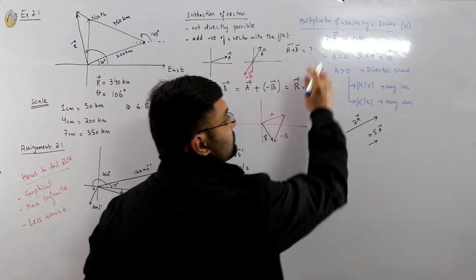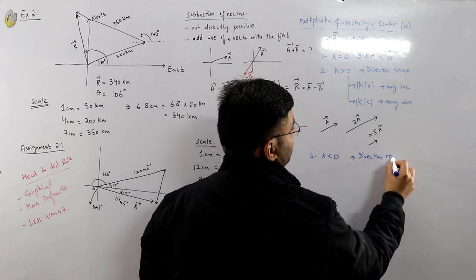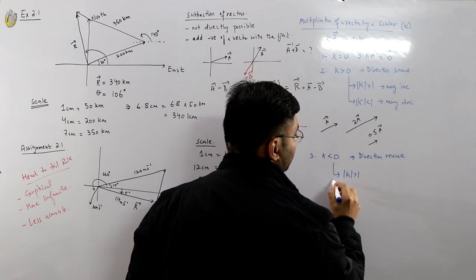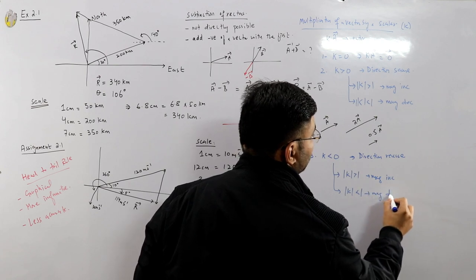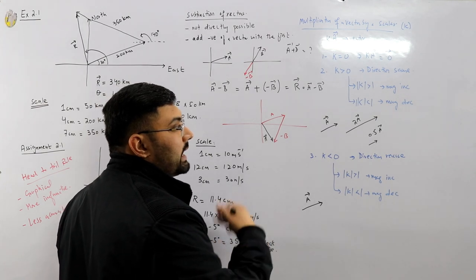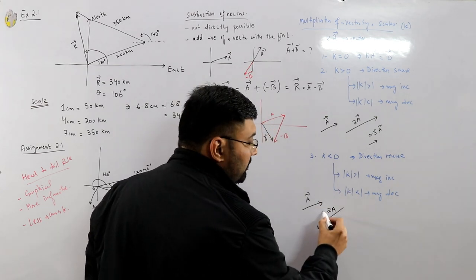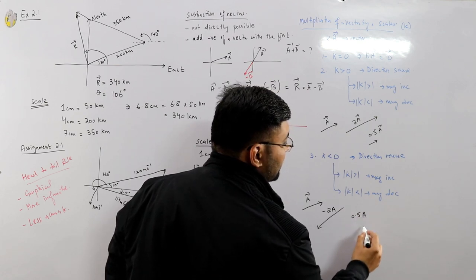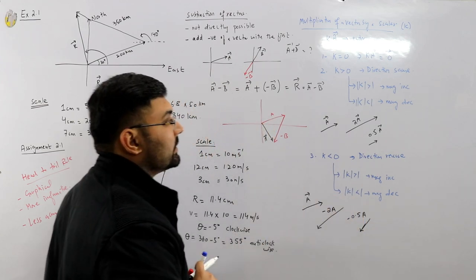If k is less than 0, direction reverses. Magnitude still depends on |k|: if |k| > 1 magnitude increases, if |k| < 1 magnitude decreases. For example, −2a gives double magnitude in opposite direction; −0.5a gives half magnitude in opposite direction.